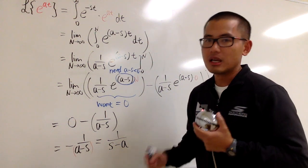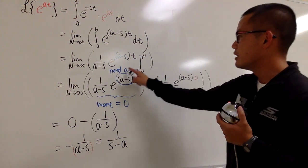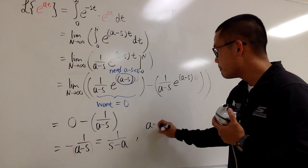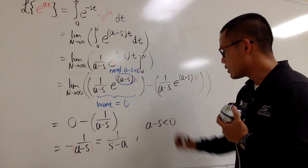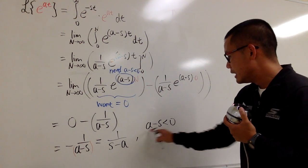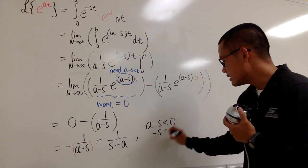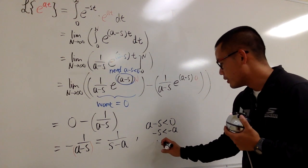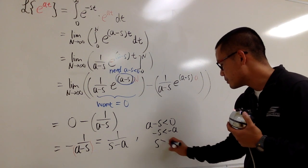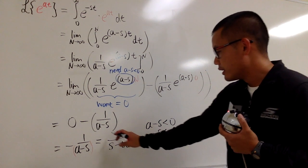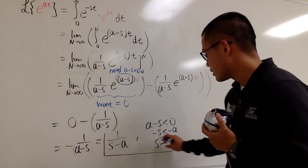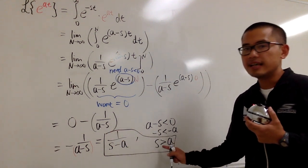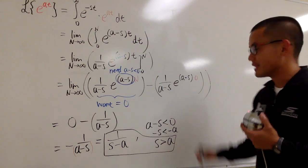This right here will be the result, but be sure you attach this condition. The condition is that we wanted a minus s to be less than 0. We can fix this a little bit, add a to both sides. So negative s is less than negative a. Divide both sides by negative 1. So the condition is s has to be greater than a. This is the part that we need. 1 over s minus a, and the condition is s has to be greater than a. That's it.